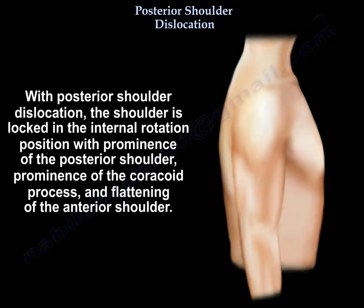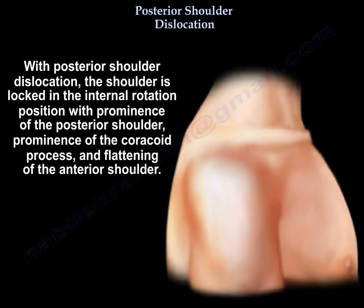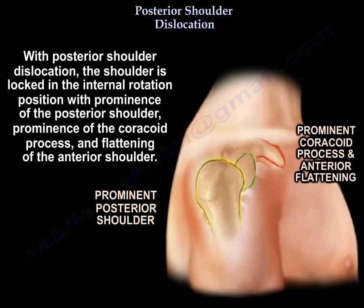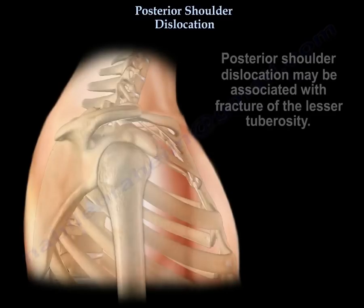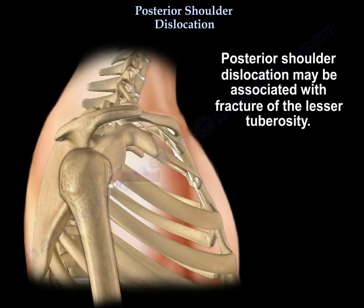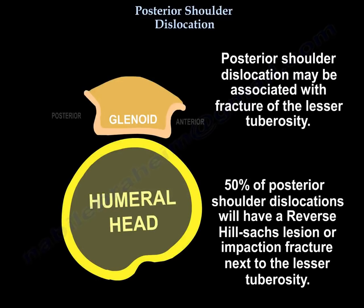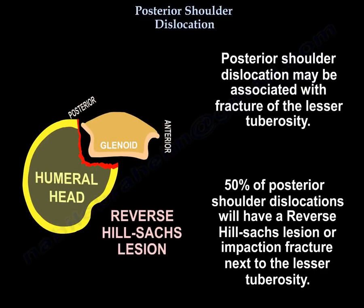With posterior shoulder dislocation, the shoulder is locked in internal rotation with prominence of the posterior shoulder. There will be prominence of the coracoid process and anterior flattening of the shoulder. Posterior shoulder dislocation may be associated with fracture of the lesser tuberosity. Fifty percent of posterior shoulder dislocations will have a reverse Hill-Sachs lesion or impaction fracture next to the lesser tuberosity.